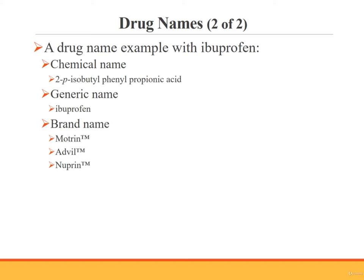For example, the medication commonly taken for aches and pains is ibuprofen. Its chemical name is 2-(p-isobutylphenyl)propionic acid — tricky to spell, pronounce, and remember. Ibuprofen is the generic name, much simpler to remember, and any pharmacist or physician will know what you are talking about when you use it. The companies that manufacture ibuprofen market it under brand names including Motrin, Advil, and Nuprin — these are the names you will see on the cartons at your local pharmacy.